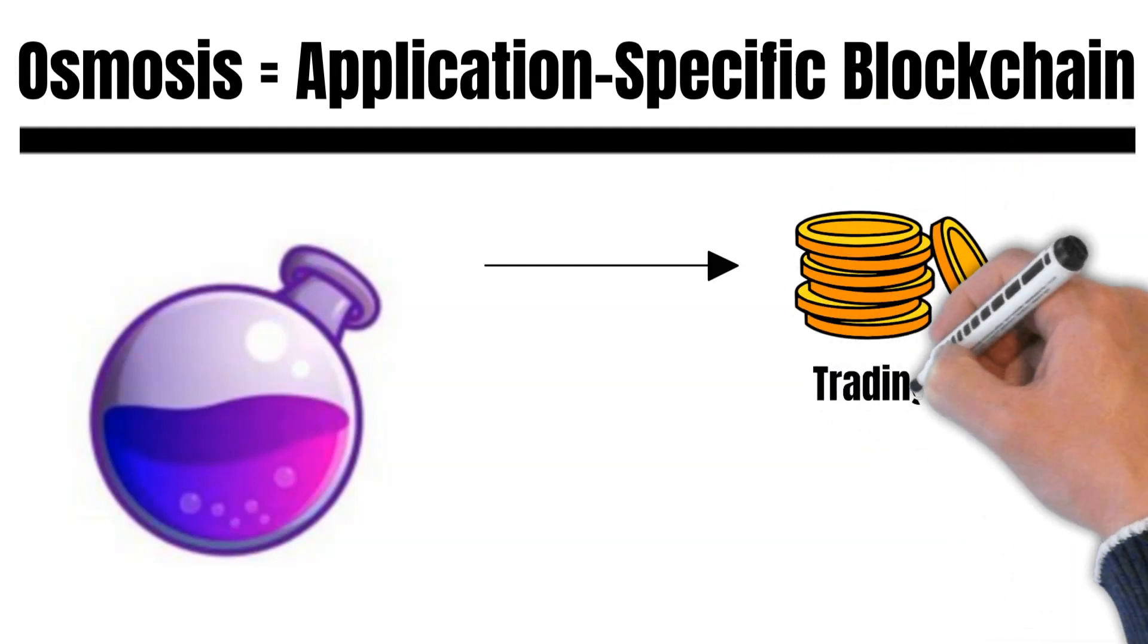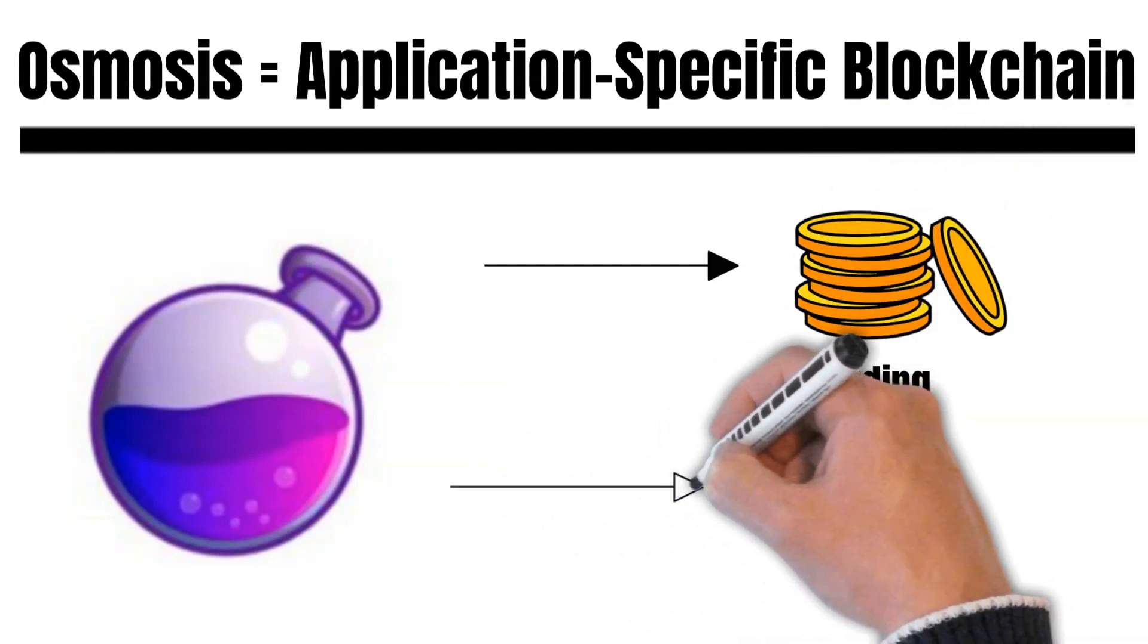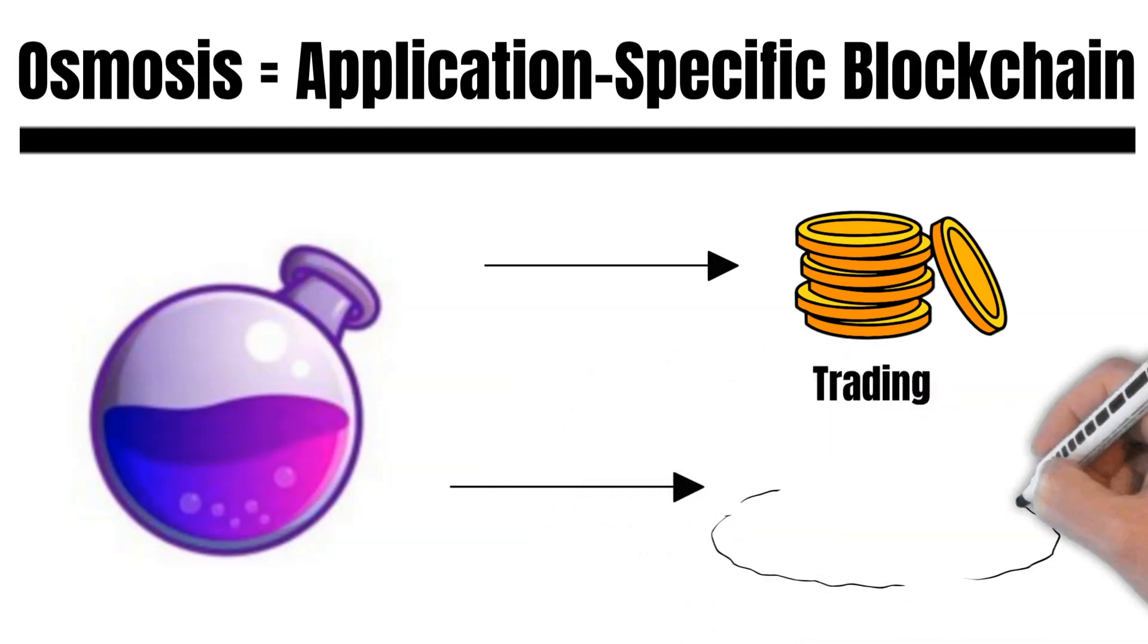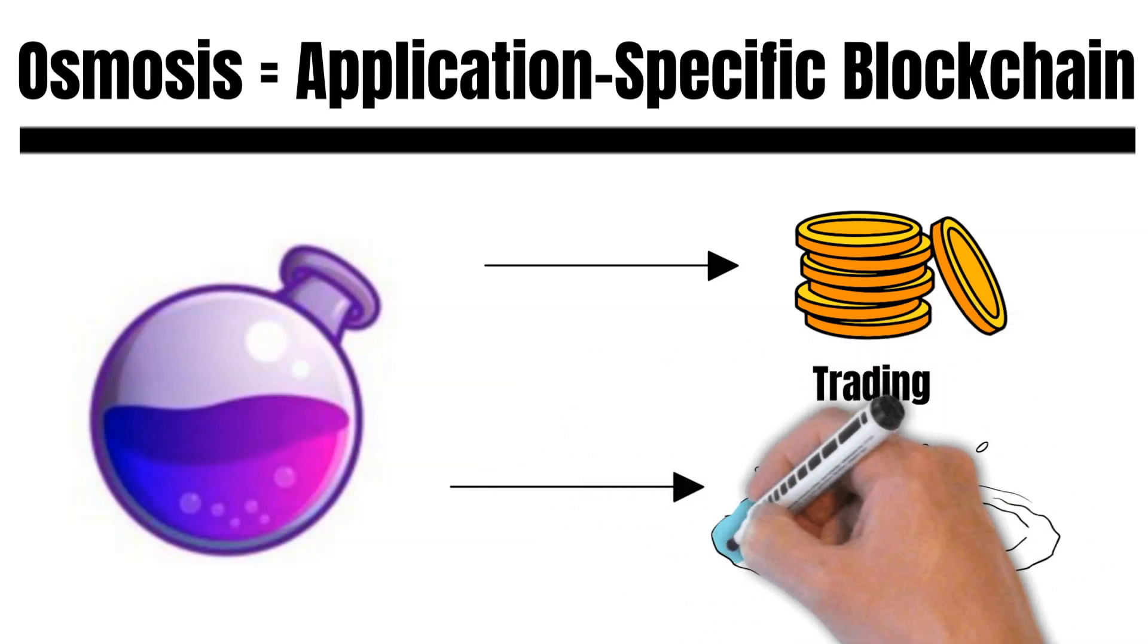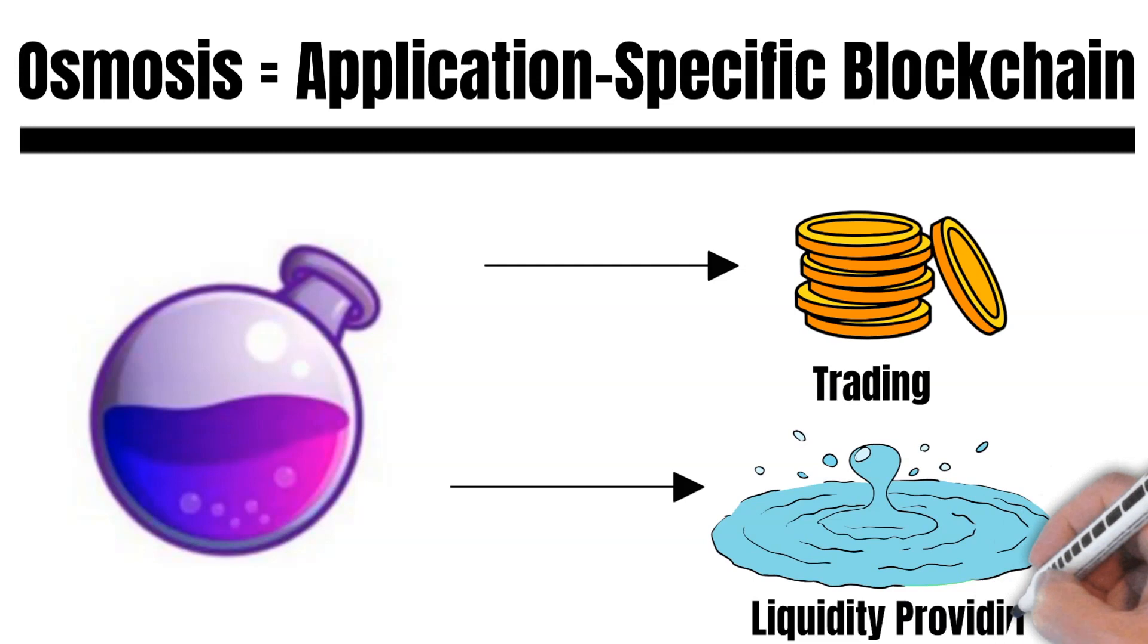For example, you could swap Atom against UST on Osmosis, as well as provide liquidity for Atom and UST. This is what Osmosis is all about on a very high level.